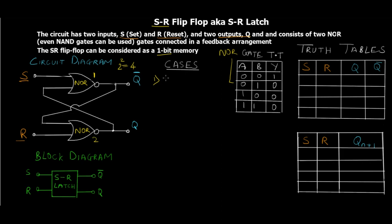For Case 1: S = 0 and R = 1. Starting with the lower NOR gate — since R is high, one input of that NOR gate is 1. From the NOR gate truth table, if any input is high, the output is always 0, regardless of the other input. So we don't need to know what the feedback input is; we can directly say the output Q-bar is 0.